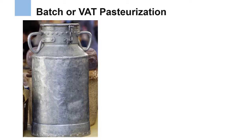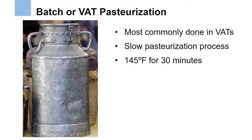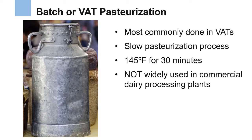Now let's discuss the first type of pasteurization: vat or batch pasteurization, which is most commonly done in vats. This is a slow pasteurization process that requires the milk to be heated to a temperature of 145 degrees Fahrenheit and then held at that temperature for 30 minutes. Hence this pasteurization method is not widely used; however, some farmers and small milk processors still use this process for small batches around the world.